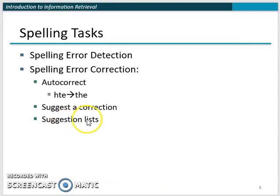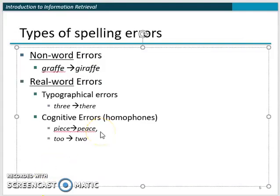A third option is to suggest a list of corrections instead of a single one, so the user can choose from multiple words. Now, there are two types of spelling errors. The first is non-word spelling errors, where a misspelled word is not a real word at all. For example, if the user wanted to write 'giraffe' but wrote a misspelled version instead, that misspelled version is a non-word.